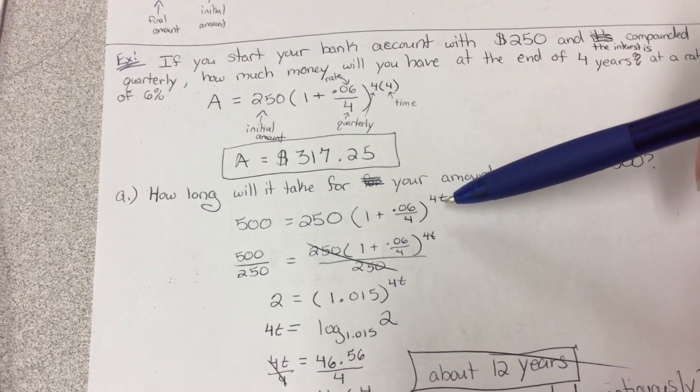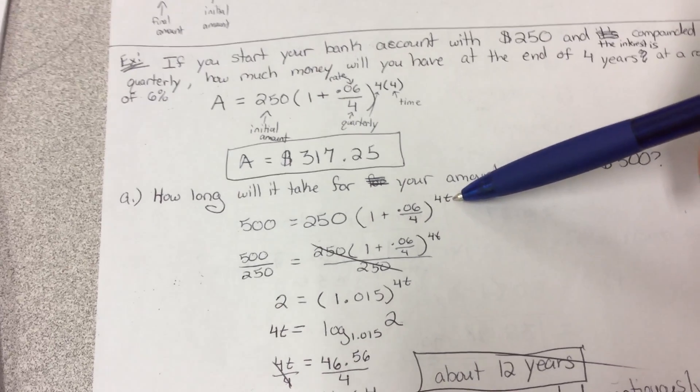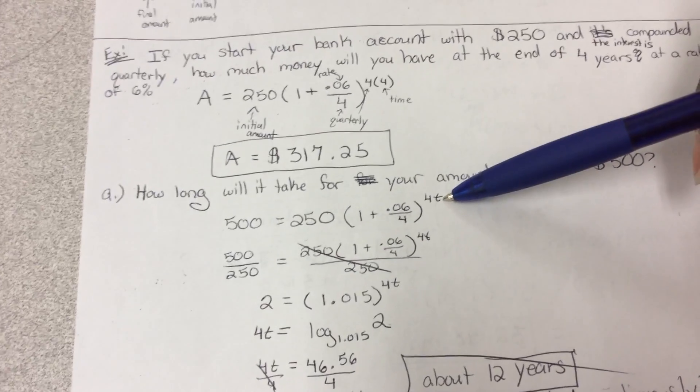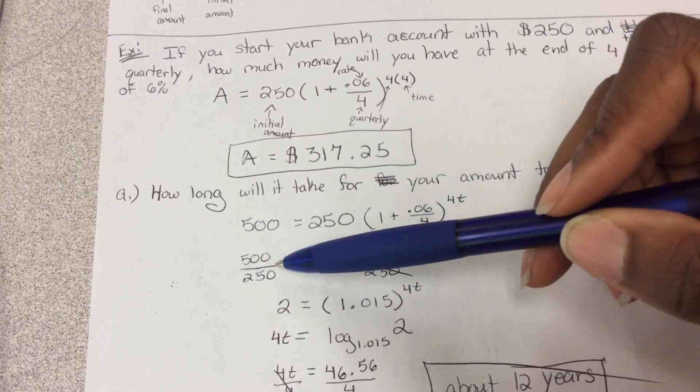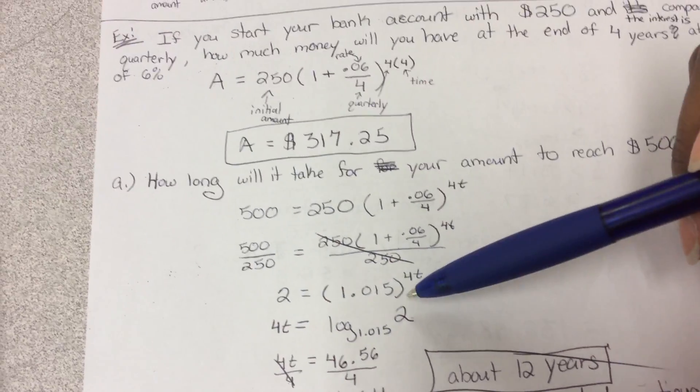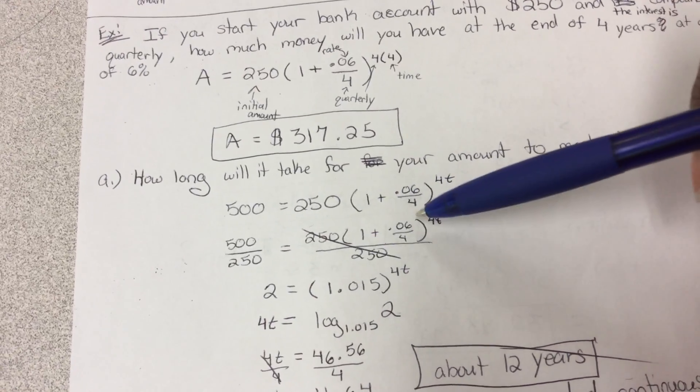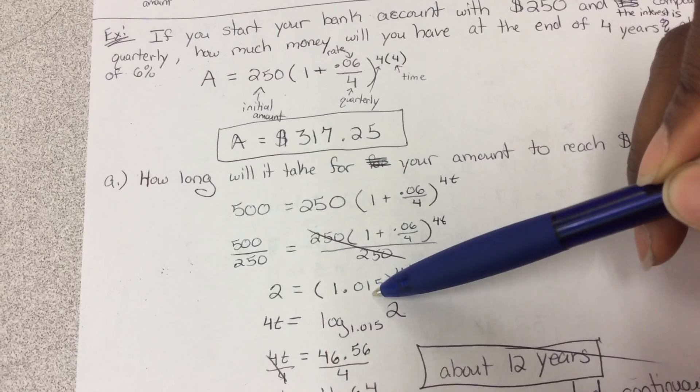The only thing is that we're now trying to solve for T, because they're asking how long it would take. First thing I'm going to do, divide both sides by 250. Got 2. And then I literally just typed all that in the calculator, and I got 1.015.